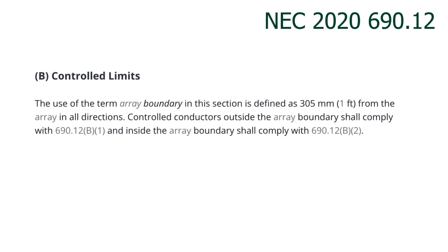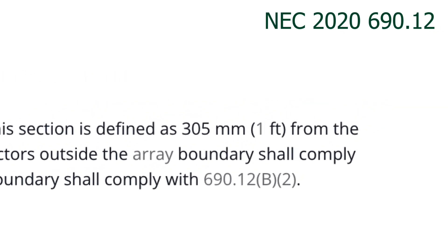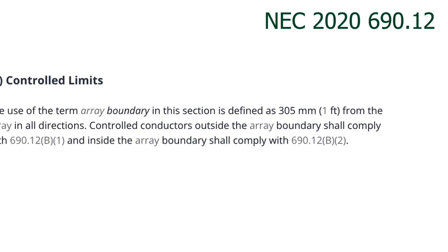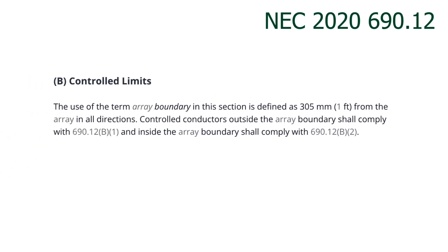690.12 B1 identifies controlled conductors outside of the array boundary. This boundary is defined as 1 foot, or 305 millimeters, from the array in any direction.